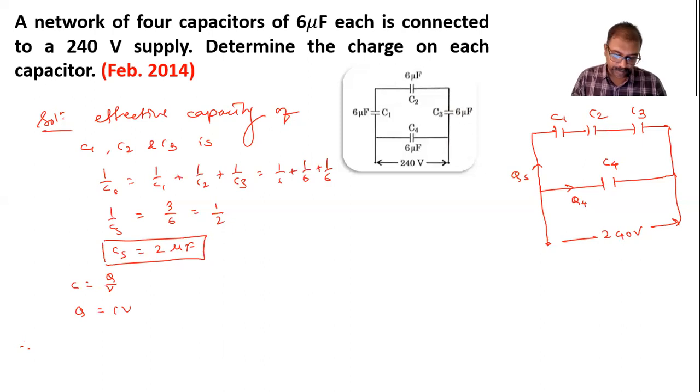C1, C2, and C3 is: I can write Qs equals, by using this formula, capacity Cs times V. Cs is 2 microfarads.